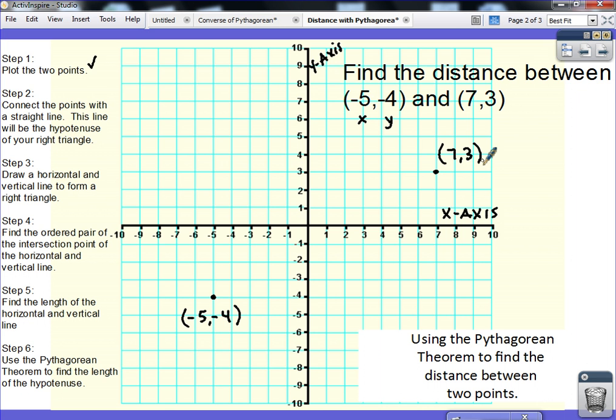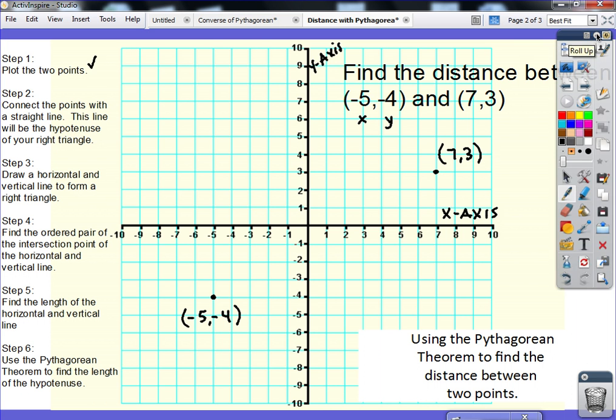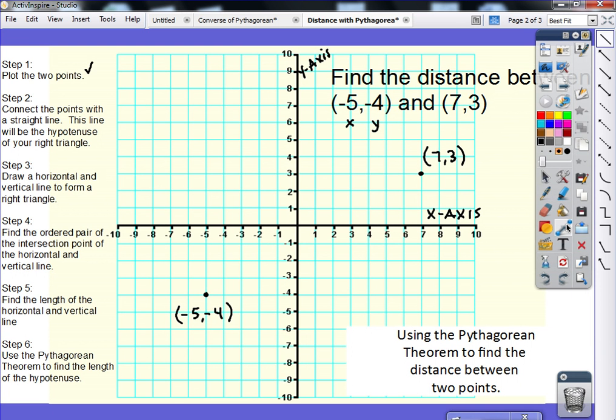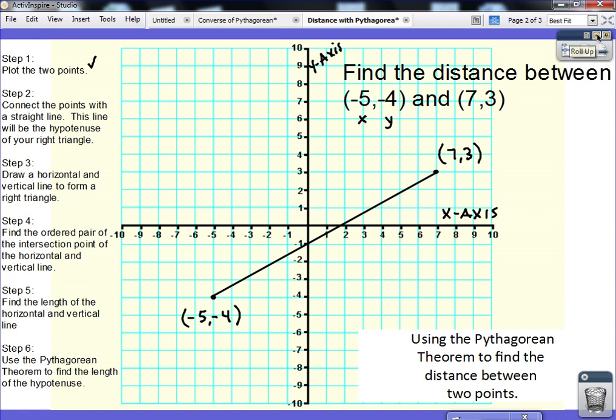Step 2, connect the points with a straight line. So let me just get out my tool here to draw a straight line, and there we go. Now notice that this line will be the hypotenuse of your right triangle.